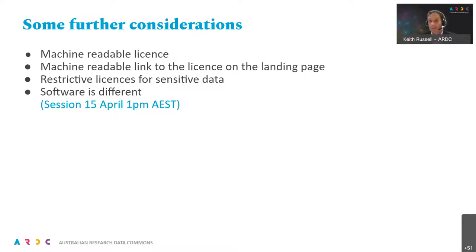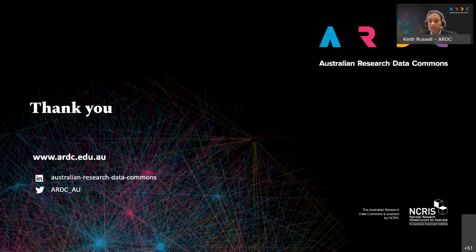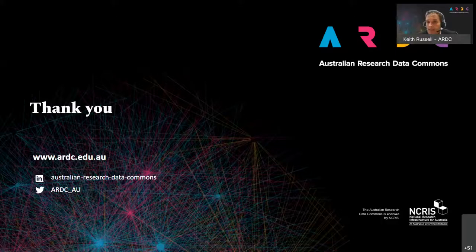Finally, this is about data licensing and attaching a license to your dataset. If you're interested in licensing something else like your software, you'll need to use something different. The Creative Commons suite works really well for data and for publications, but it does not work well for software, and for that you need different licenses. We have a session on the 15th of April where we will speak about software licenses and which ones are most applicable and what the different considerations are. That was a quick overview of the FAIR principles, the FAIR requirements we have for our projects, and a little bit of an overview of data licensing.